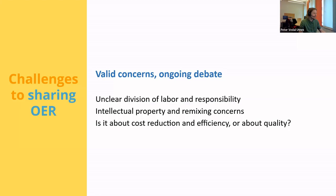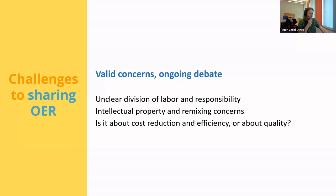These are more serious concerns that shouldn't be dismissed. The first is the unclear division of labor and responsibility. It's very confusing to figure out who is responsible — library staff, tech support, or faculty — for things that come up, such as curation, archiving issues, suitability of OER, and problems with licenses. It's very unclear who to turn to, and I assume this is a problem elsewhere as well.